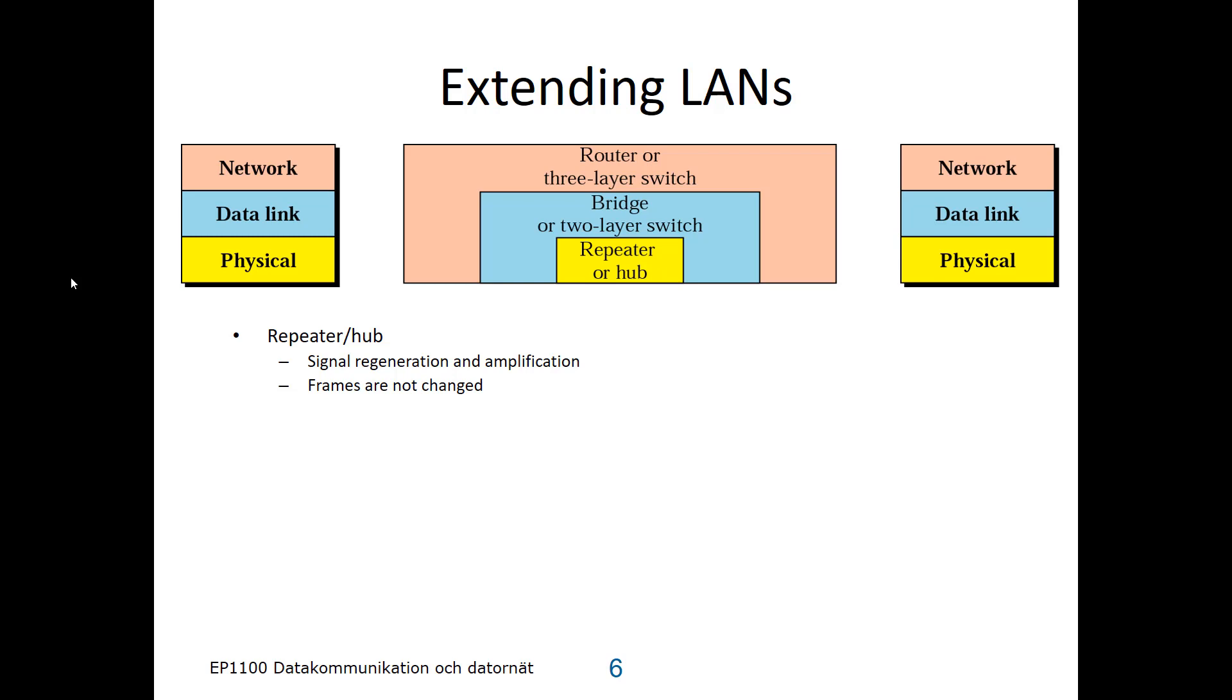When you connect LANs on the data link layer, we call the function a bridge, or a layer 2 switch. It can connect LANs of different types, but they have to have the same data link addresses. So 802.3 and 802.11 share address structure, and they could be connected.